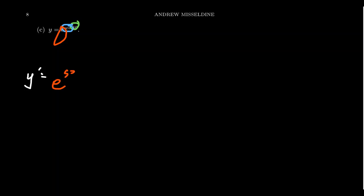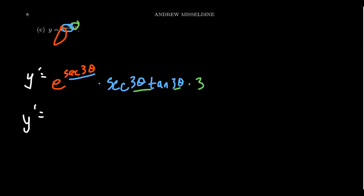One last example: let y = e^(sec(3θ)). We see three functions: 3θ sits inside secant, which sits inside the exponential e^x. Taking the derivative: the outermost derivative of the natural exponential just gives back itself, so we get e^(sec(3θ)). We multiply by the derivative of sec(3θ): the derivative of secant is secant times tangent, giving sec(3θ)·tan(3θ). Then we take the derivative of the inner function 3θ, which is 3. So y′ = 3·e^(sec(3θ))·sec(3θ)·tan(3θ).